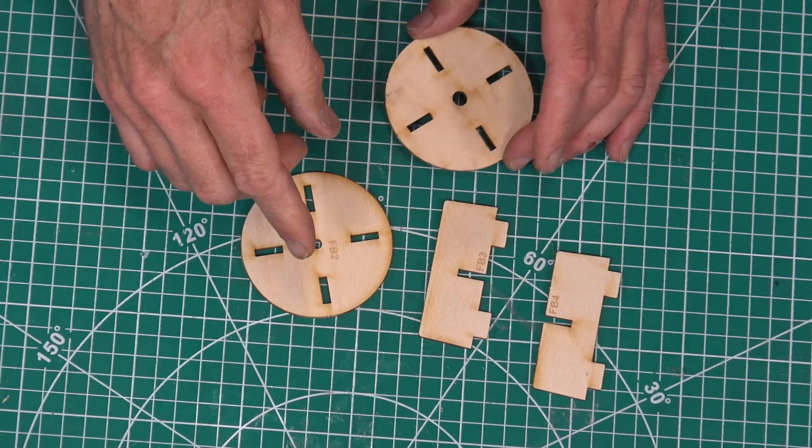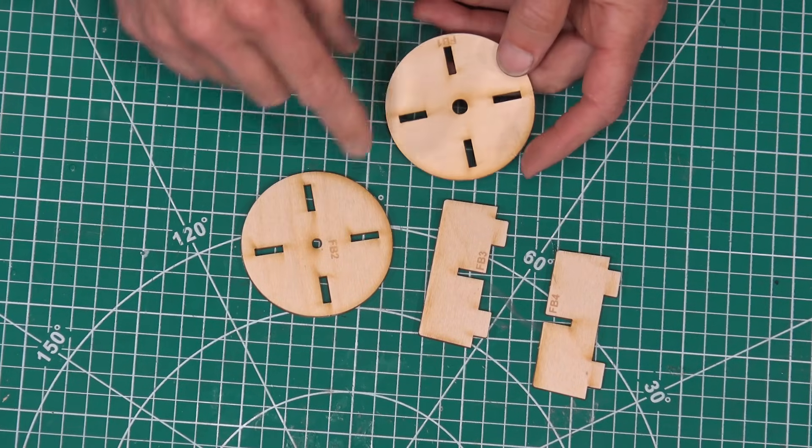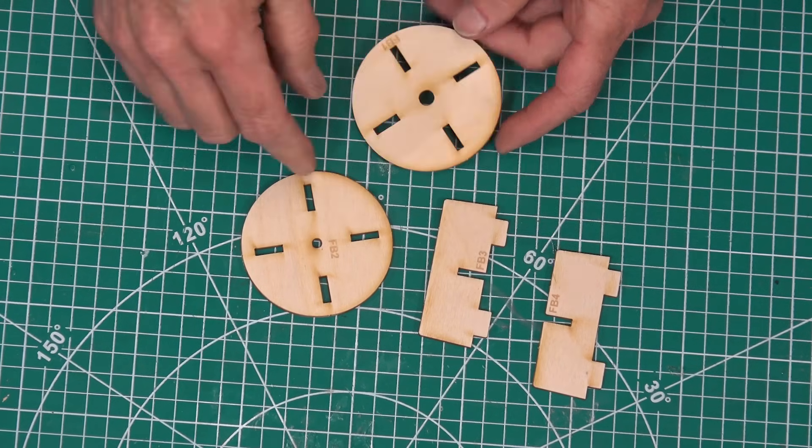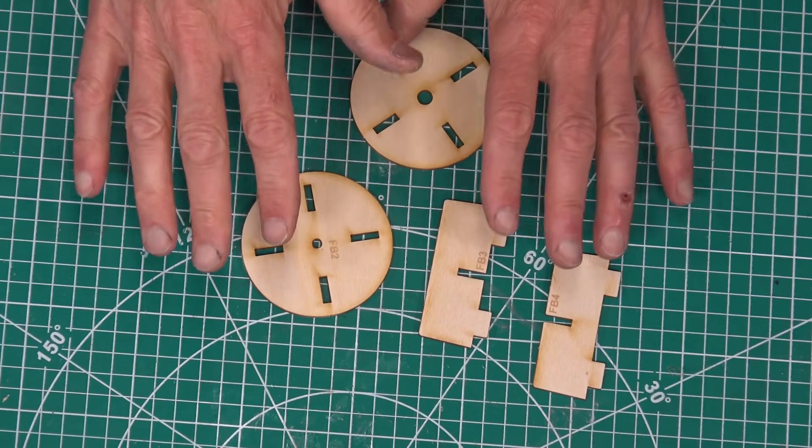Okay, we're on step 99. We're going to remove FB1, 2, 3, and 4 from the plywood sheet, which I've already done.